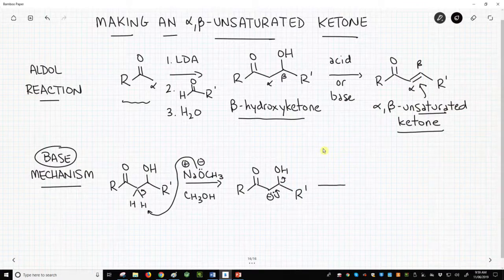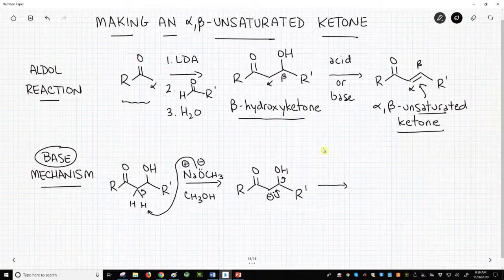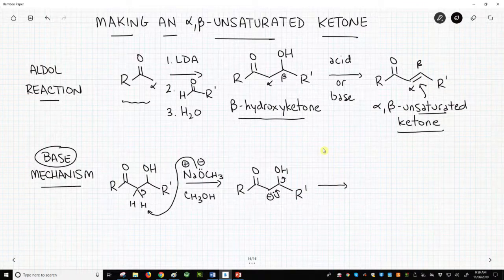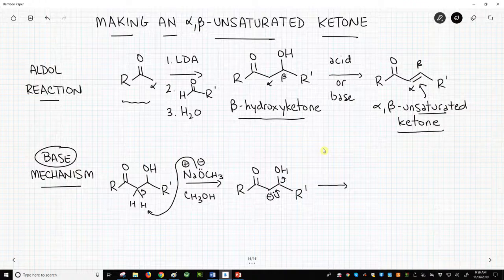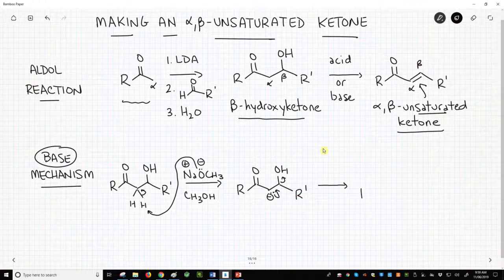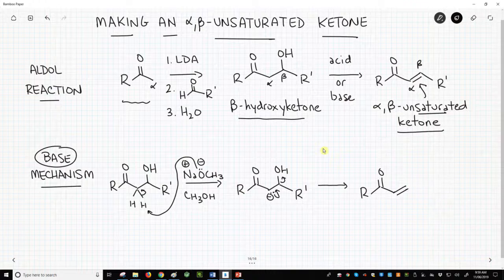Normally, when we say leaving group, we're thinking of SN2 leaving groups like bromides or tosylates. This is not an SN2 reaction, so we need to be open to different leaving groups. Once the hydroxide is gone, we form a new pi bond.